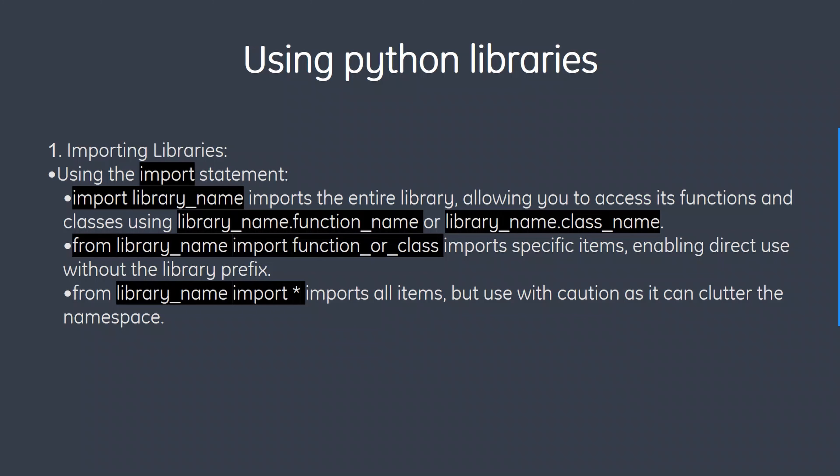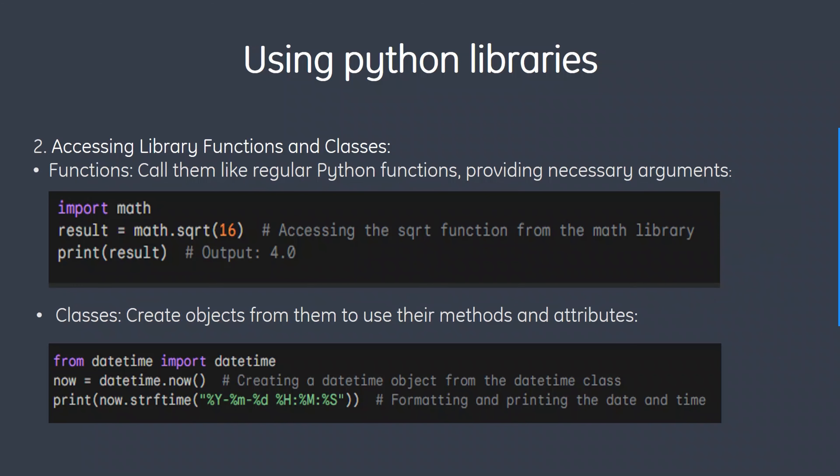Now, how do you use Python libraries? Firstly, you import the library using the import statement — for example, 'import library_name' — which imports the entire library, allowing you to access its functions and classes using 'library_name.function_name' or 'library_name.class_name'. You can also use 'from library_name import *', which imports all items, but use this with caution as it can clutter the namespace. For accessing library functions, you call them like regular Python functions providing the necessary arguments. For classes, you create objects from them to use their methods and attributes.